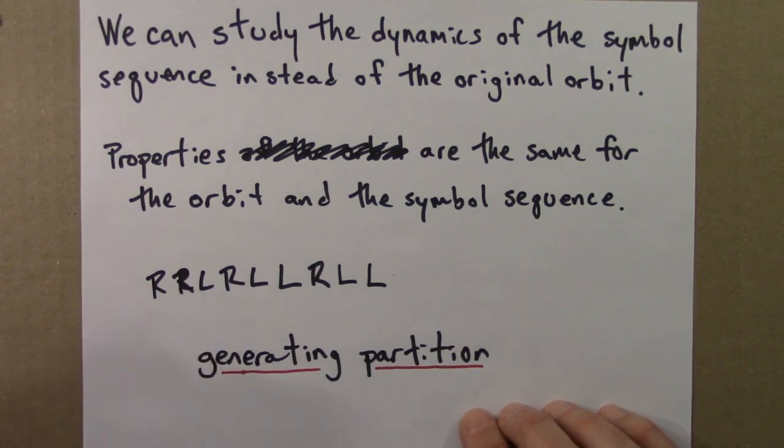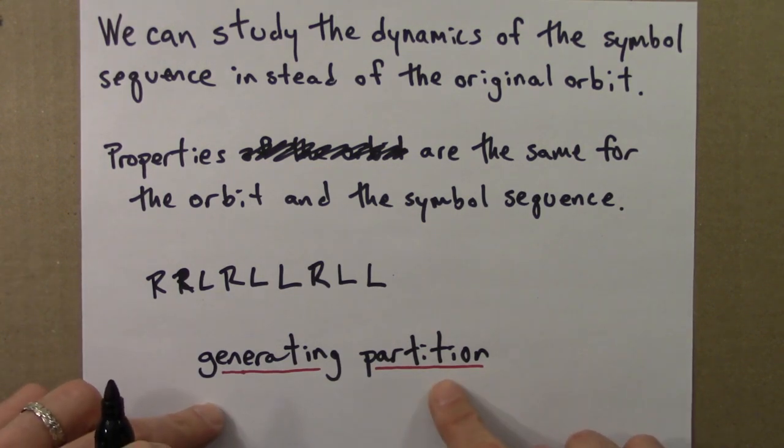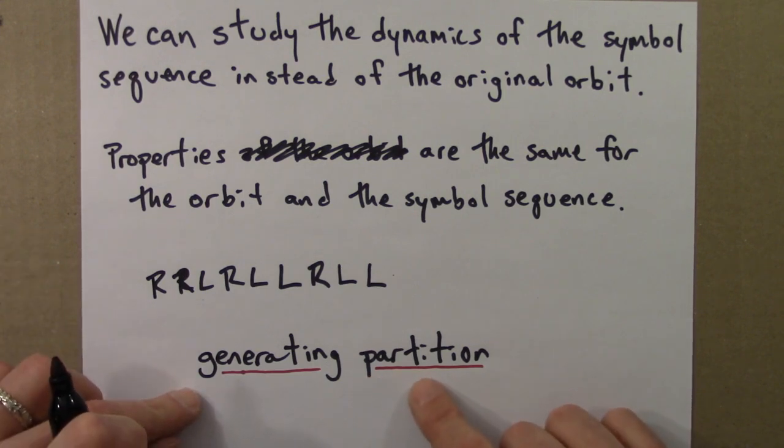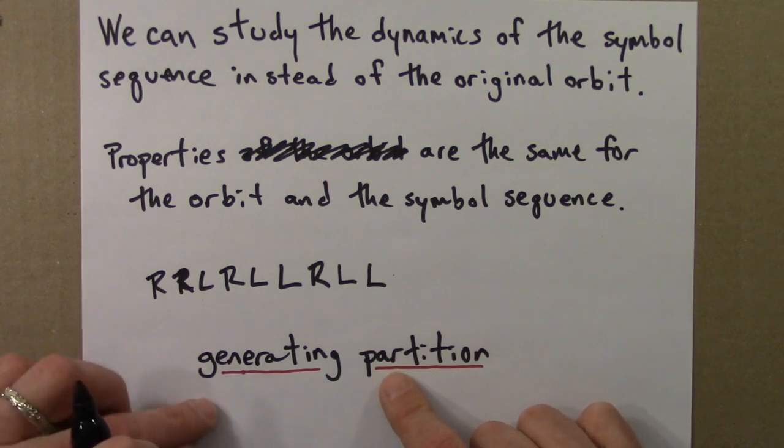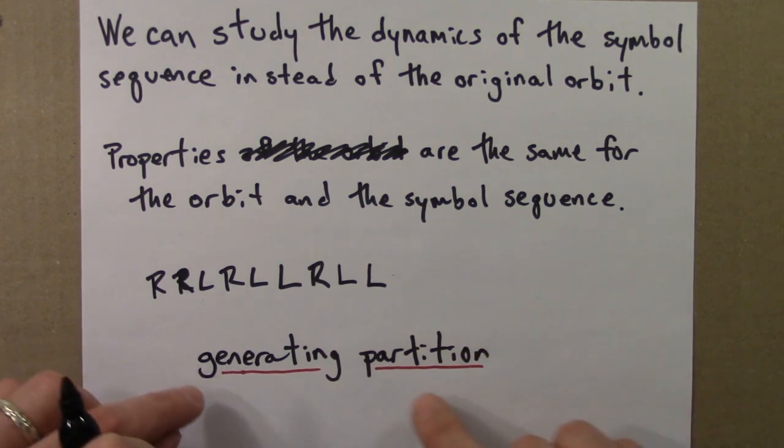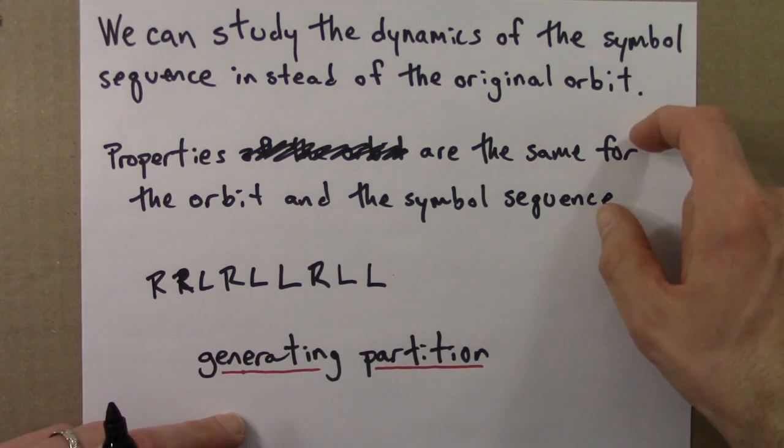This tells me how to go from the orbit, the x's, to the symbols, the L and R. This scheme would be called a generating partition if longer and longer sequences encode for smaller and smaller and unique non-overlapping regions of initial conditions. Not all symbolic encoding schemes have this nice property. In fact, if I had chose 0.4 as the cutoff, so if x was less than 0.4, I call it L and it's R otherwise, then that would not have this property. It's only special partitions, special ways of encoding that have this nice feature. But the one that I described does indeed have this nice feature.